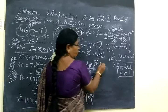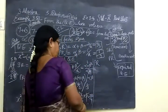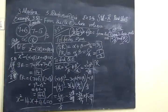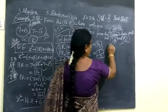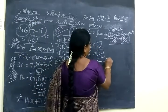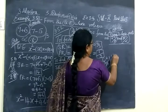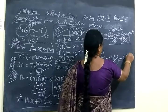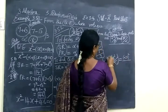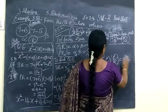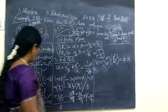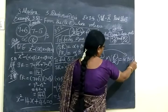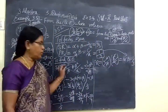Now we find the product of the new roots. Product equals (alpha squared over beta) times (beta squared over alpha). Multiplying numerators and denominators: alpha squared times beta squared over beta times alpha equals alpha beta. So the product of the new roots is equal to alpha beta, which is 1 over 3.